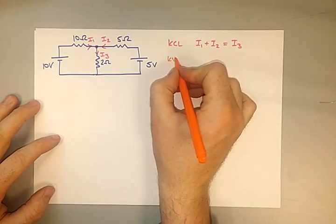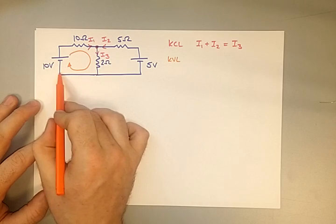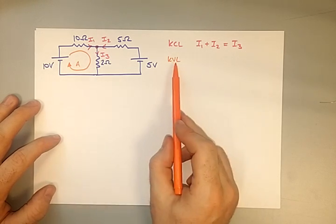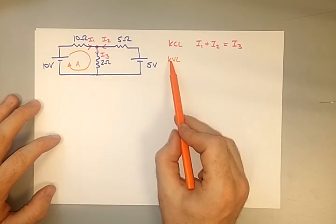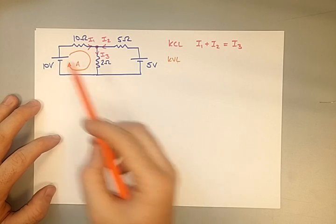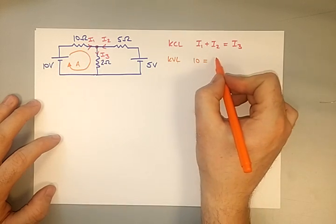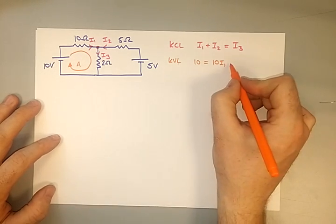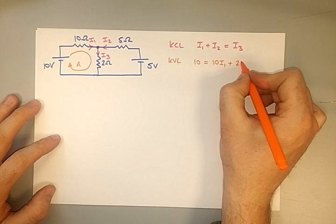Next is Kirchhoff's voltage law. We draw a loop — label it Loop A — which is a closed part of the circuit. In this loop we have a source voltage of 10V and voltage drops across two resistors. Kirchhoff's voltage law states those drops sum to 10V: 10 equals 10I1 plus 2I3.